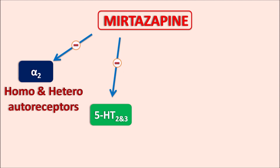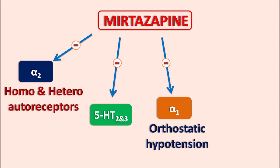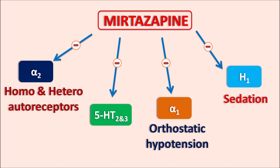Similarly, this drug blocks alpha-1 receptors present on major blood vessels. By blocking these alpha-1 receptors, Mirtazapine can produce orthostatic hypotension. Finally, this drug also has antagonistic activity on H1 receptors, which are responsible for allergic and inflammatory responses. By blocking H1 receptors, Mirtazapine can produce sedation in patients.